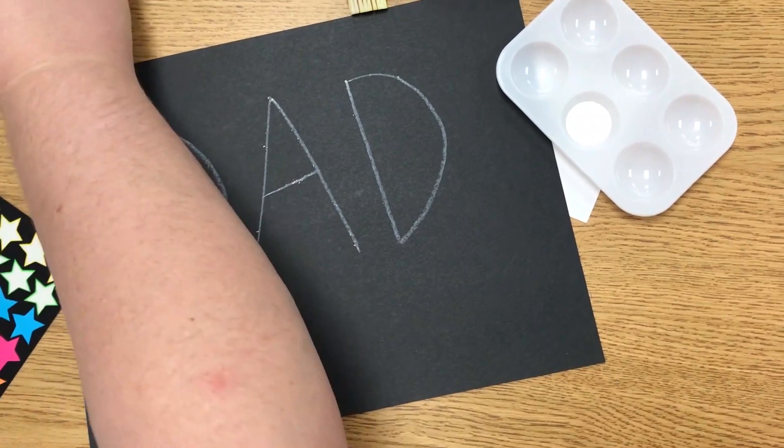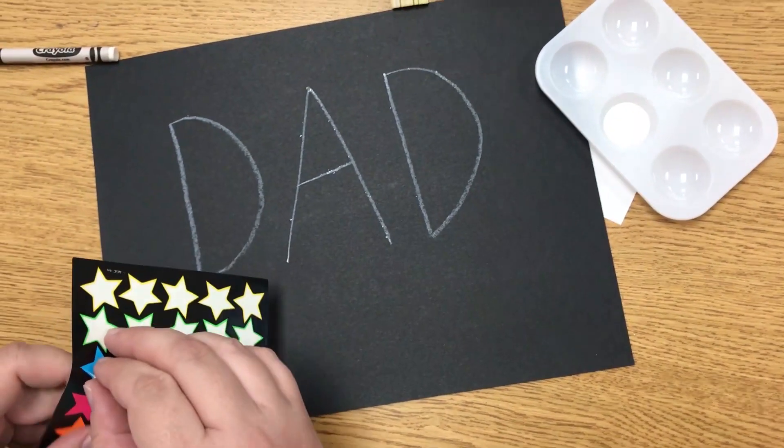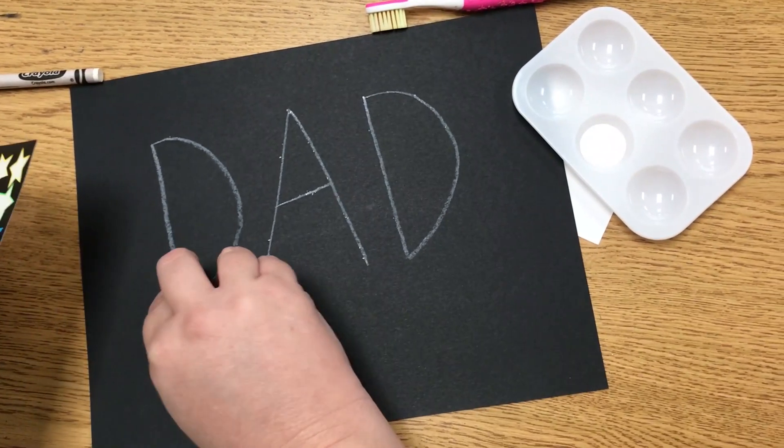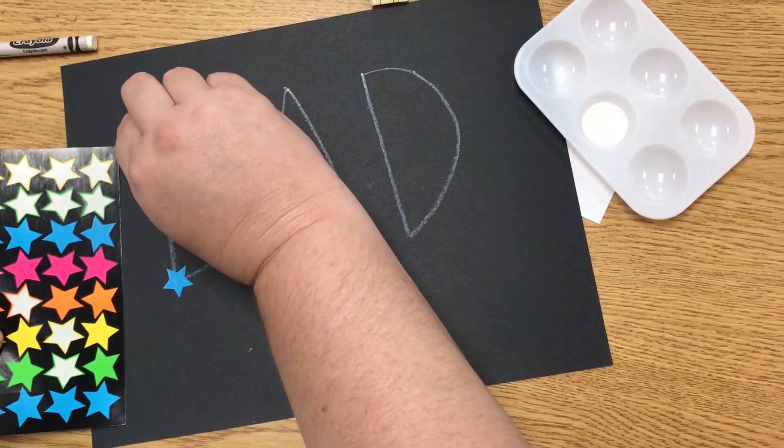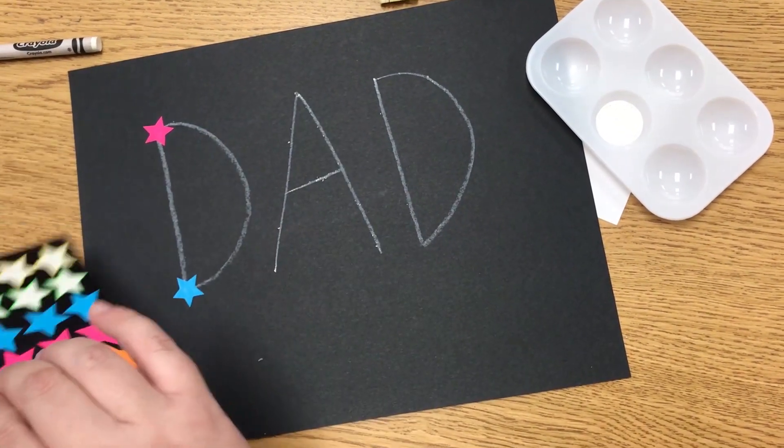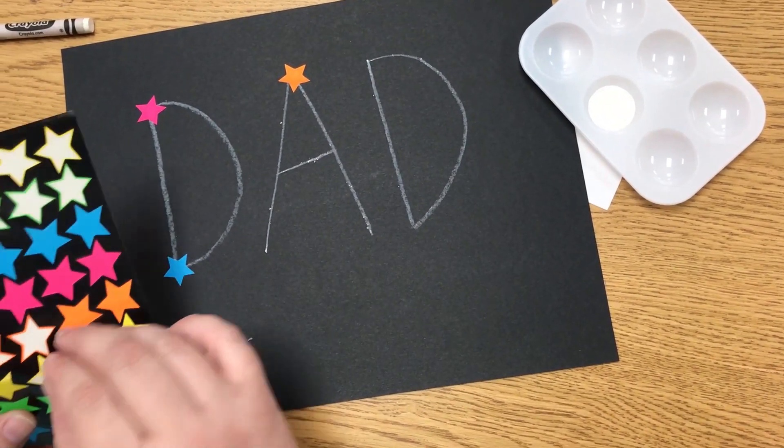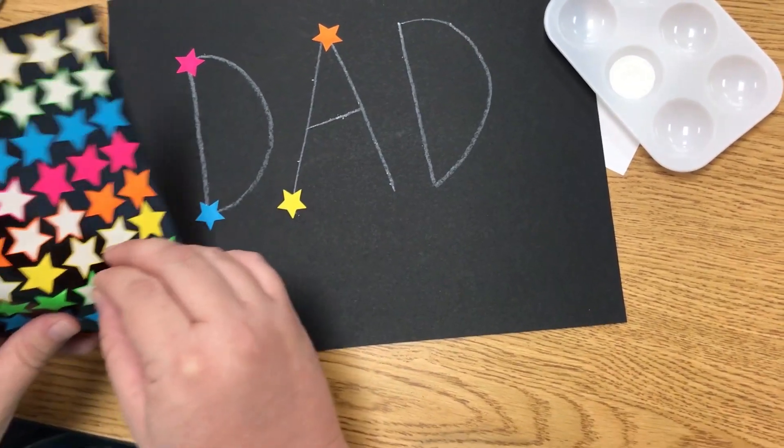Now I'm going to go with my star stickers and add stars all around these letters to make it look like a constellation playing dot to dot in the sky with the stars. Isn't that looking cool? Don't you love how these bright colors pop against that black paper?